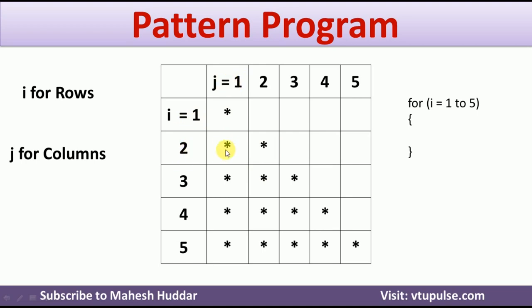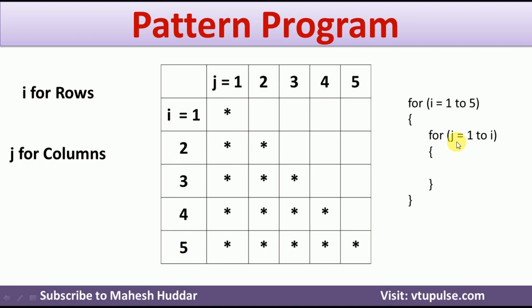When i is equal to 2, we need to print 2 stars when j is equal to 1 and 2. Similarly, when i is equal to 3, we print stars at j equal to 1, 2, and 3. What this indicates is that the value of j follows the value of i — it can be written as j going from 1 to i.